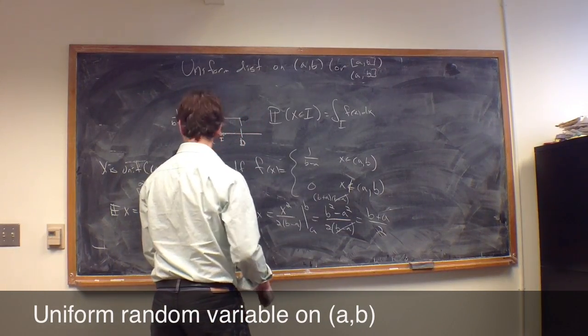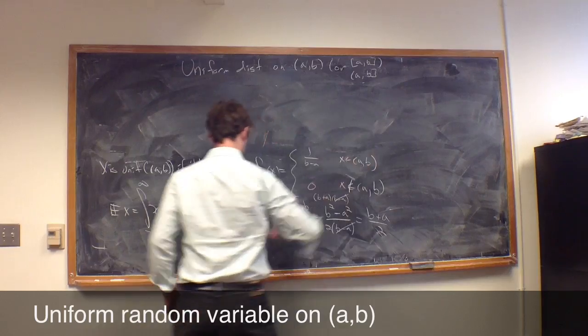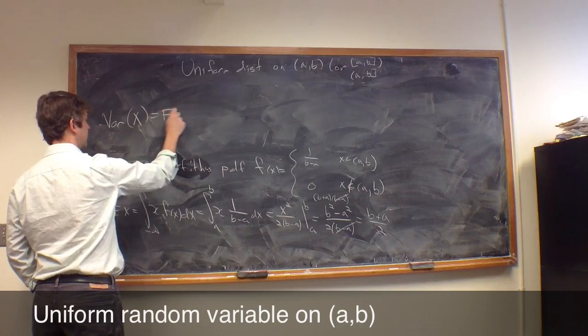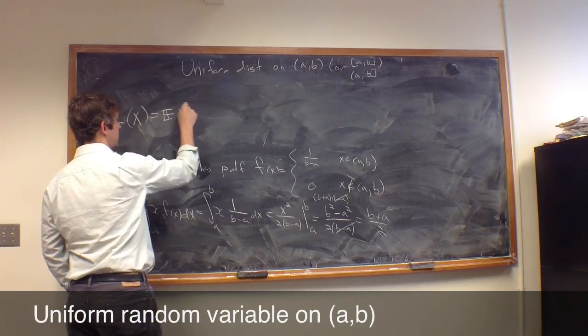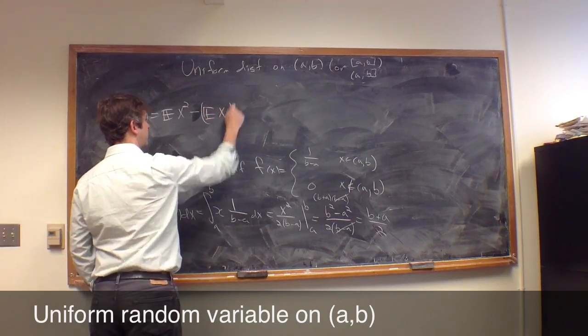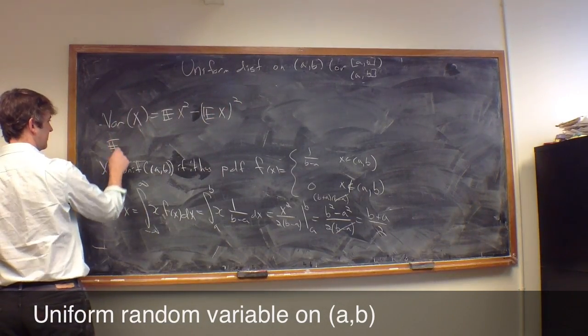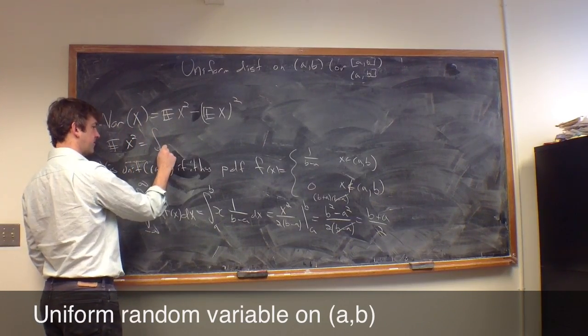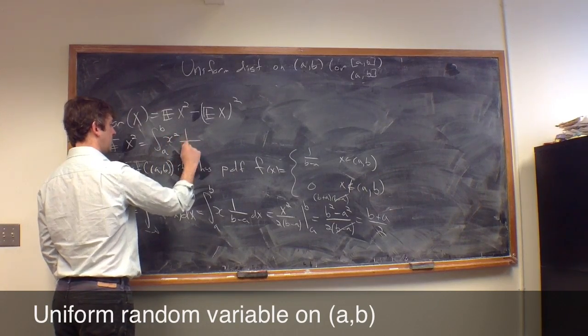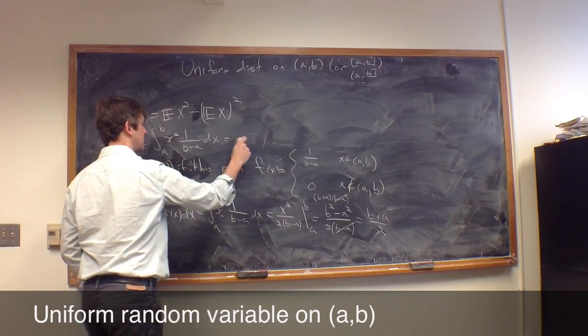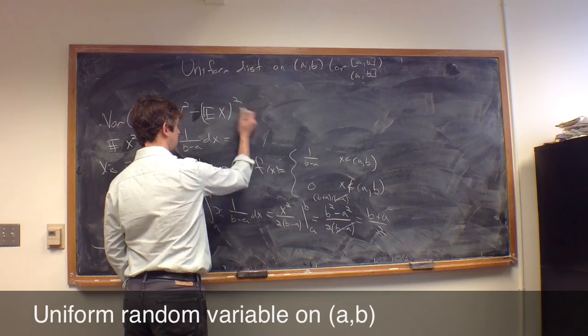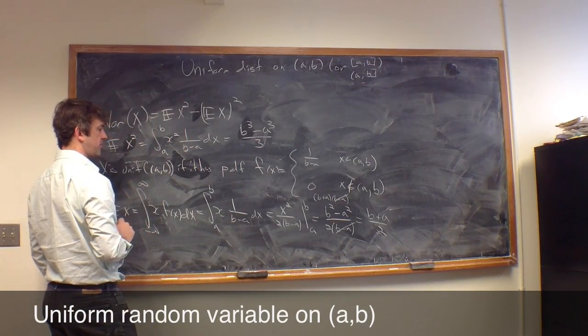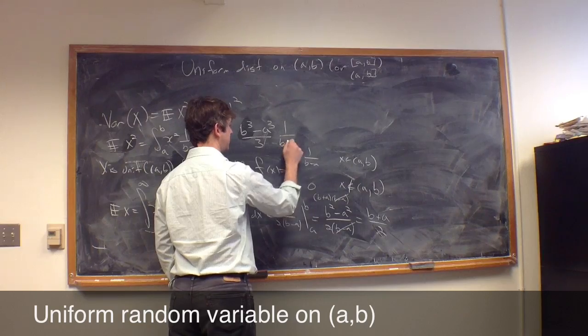Similarly, we can do another calculation of the variance. The variance of X is the expected value of X² minus the mean squared. So we need to do a quick calculation of the expected value of X². That's the integral from a to b of x² times 1/(b-a) dx, which is (b³ - a³)/(3(b-a)).